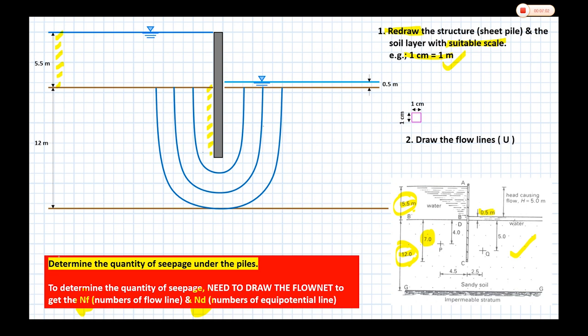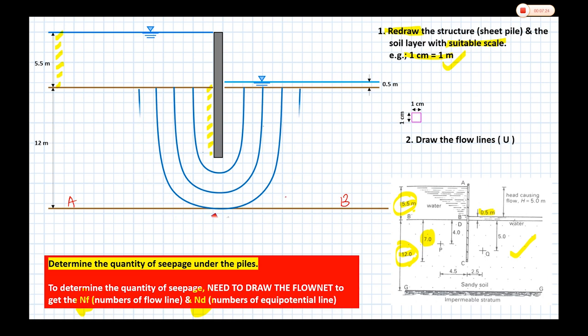Consider the boundary A-B. Make sure your flow lines do not exceed the boundary A-B. The flow line can touch the boundary A-B but cannot go beyond it — that would be wrong. Make sure it at least touches the boundary A-B.